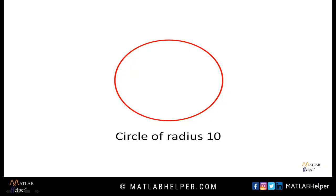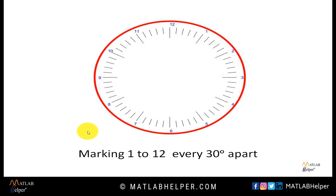Now we will see the algorithm to design an analog clock. The first step will be used to design the layout of the clock. First we will draw a circle of radius 10, then we will mark the numbers 1 to 12 every 30 degrees apart. As the circle covers 2π radians, 2π divided by 12 comes to 30 degrees. We will also plot the lines in between two consecutive hours. As the circle covers 2π radians and 1 hour is equal to 60 minutes, 2π divided by 60 comes to 6 degrees, so every 6 degrees apart we will plot the lines.